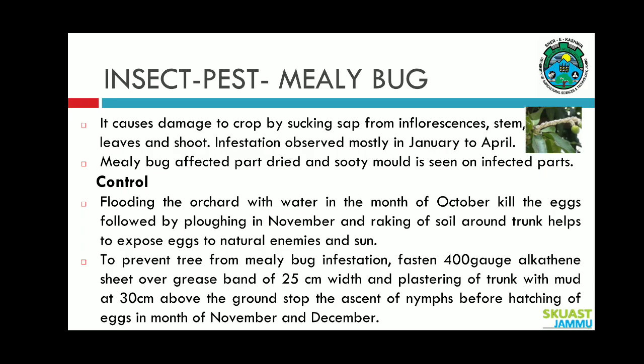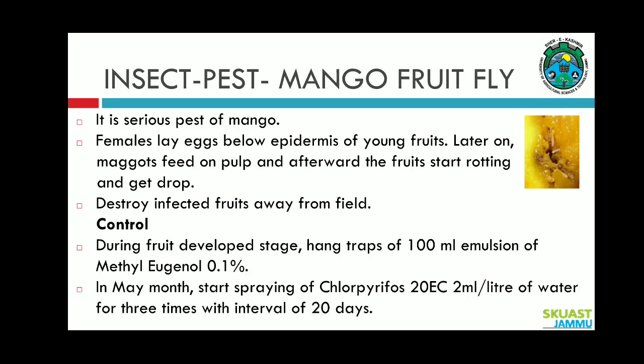The second important insect is mango fruit fly. This is also a serious pest of mango. The female lays eggs below the epidermis of young fruit, and later the maggots feed on the pulp, after which the fruit starts rotting. Destroy infected fruits away from the field. During fruit development stage, hang traps containing 100 ml emulsion of methyl eugenol 0.1 percent in the month of May.